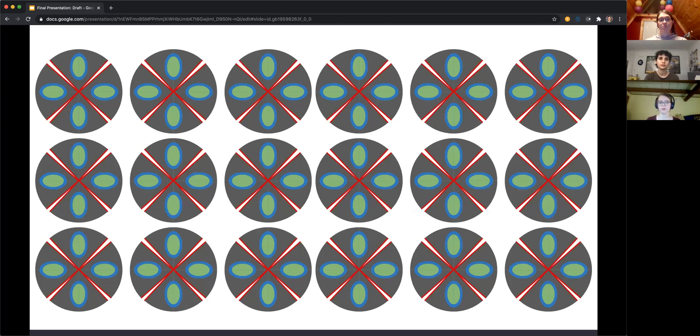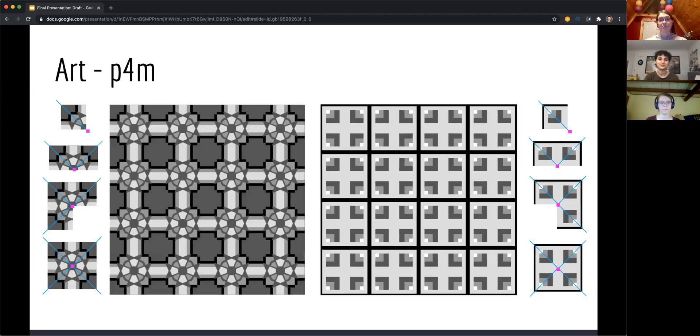And now you have a P4M wallpaper. And as you can see here, some art that we created, this is what you get when you choose different base elements. These are both P4Ms. However, they look different because there's a different base cell structure.